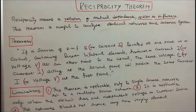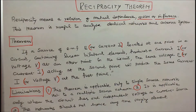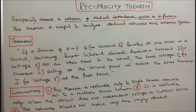Limitations: Number 1 — this theorem is applicable only to single source networks, not to multiple source networks. Number 2 — it is applicable only when the circuit has one independent voltage or current source. Number 3 — the networks should not have any time-varying element. These are all the limitations of the Reciprocity Theorem.